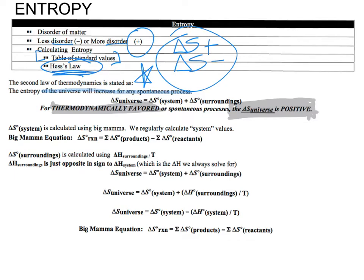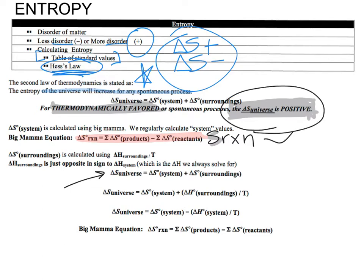We're going to focus on the ways to determine when something is spontaneous, also known as thermodynamically favored. One of the ways to determine spontaneity is knowing that the entropy — not of the system, not of the surroundings, not of the reaction — but the entropy of the universe is positive. For it to be thermodynamically favored, the entropy of the universe has to be positive.